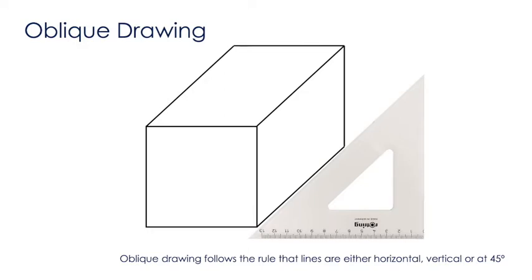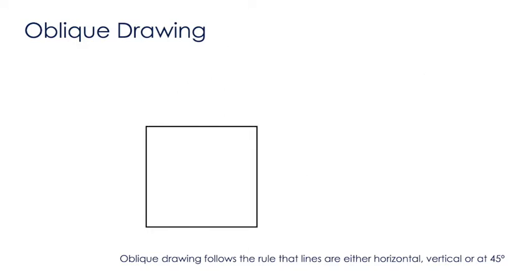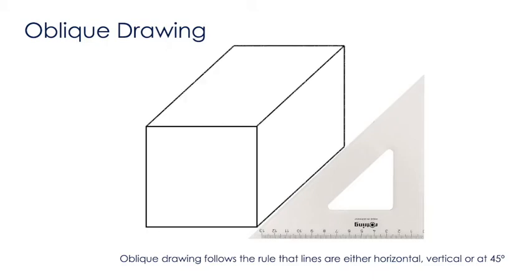When producing an oblique drawing we can start off by drawing the front face, in our case this square. We're then going to follow that square back at 45 degrees to create our three-dimensional image.